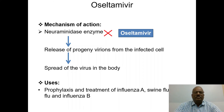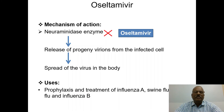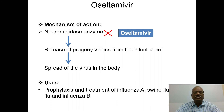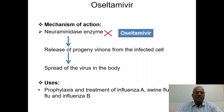Oseltamivir works on the neuraminidase enzyme, which is important for the budding and release of the virus. That neuraminidase enzyme is inhibited by oseltamivir, so the spread of virus in the body is inhibited. It is used for the treatment of influenza A virus, swine flu virus, bird flu virus, and influenza B virus.